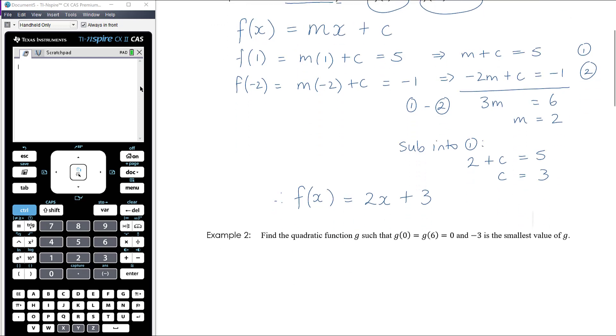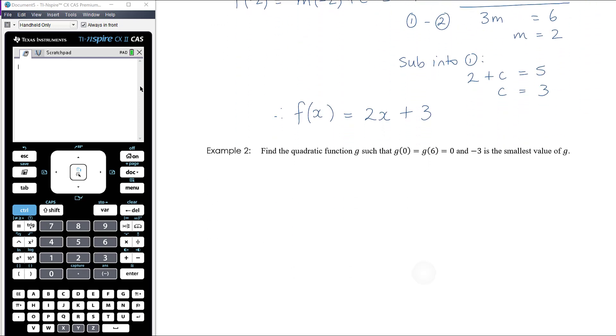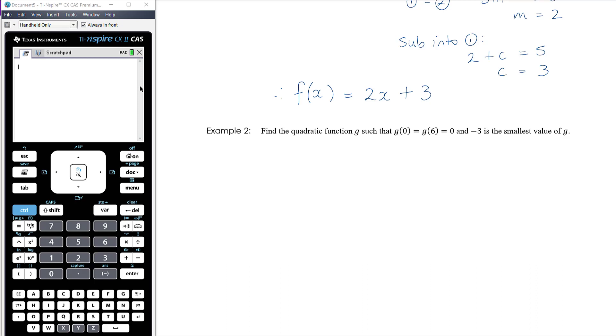Okay, example 2. Find the quadratic function g such that g(0) equals g(6), which equals 0, and -3 is the smallest value of g. So let's think a bit about what we're being told here. So quadratic function.